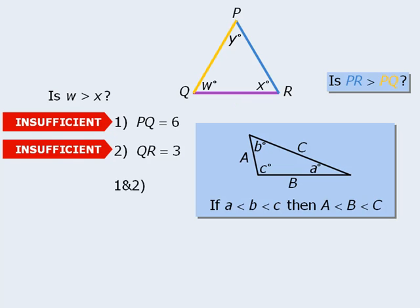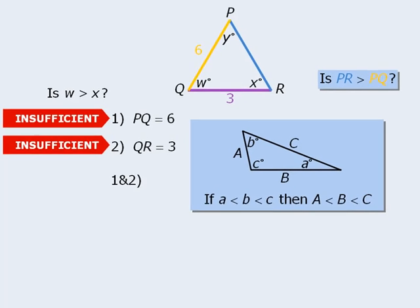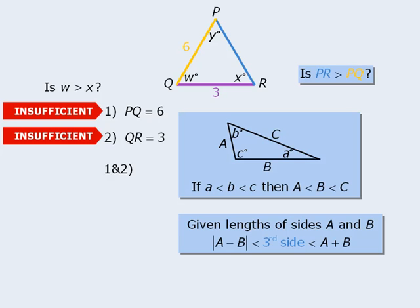Now on to both statements combined. If we know that side PQ has length 6 and side QR has length 3, do we then have enough information to answer the new target question? Well, since we now know two lengths of this triangle, we can apply this rule that tells us the range of possible lengths for the third side.